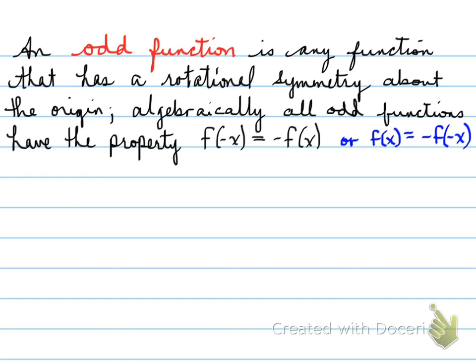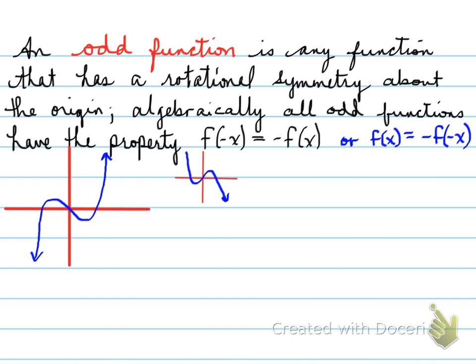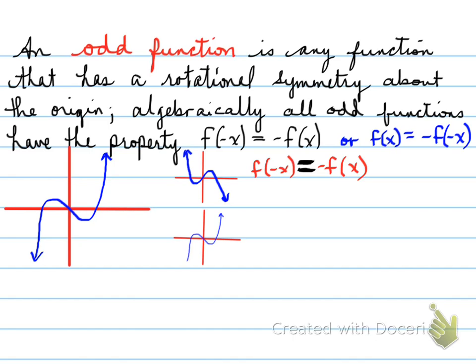Let's look at an example. We're looking at this particular graph. If I reflect it horizontally, I get this graph. Looking at these two functions, they are not the same — this is the horizontal reflection. Then I take this graph and reflect it vertically. I first take it and reflect it horizontally to test for even. Even fails.